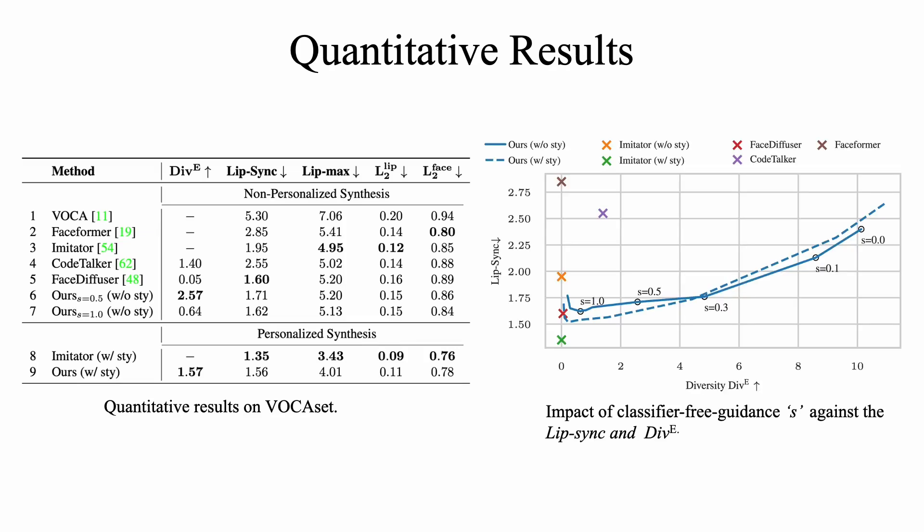We visualize the impact of classifier-free guidance against lip sync and diversity. For lower guidance values, we have high diversity and low lip sync, and vice versa for a high guidance value.